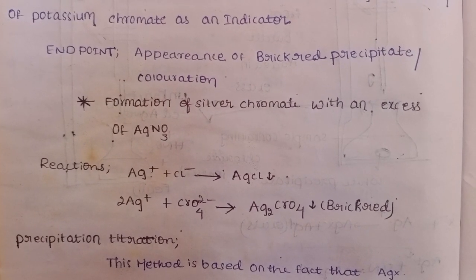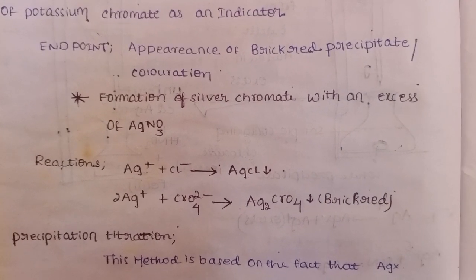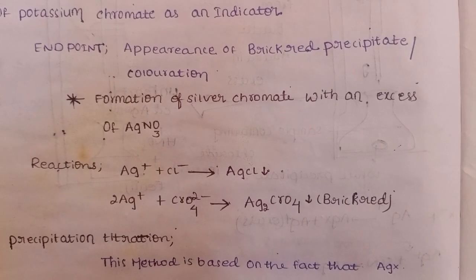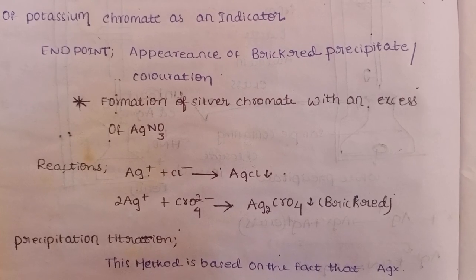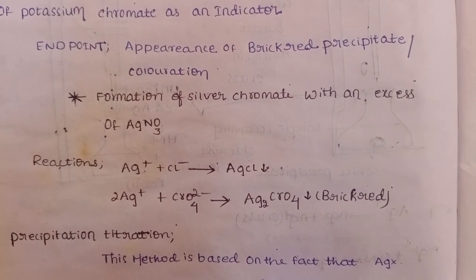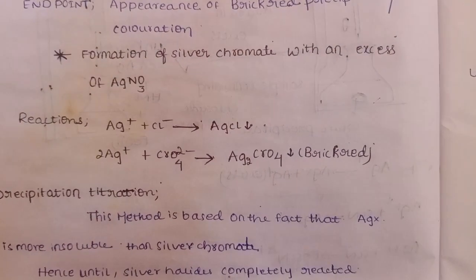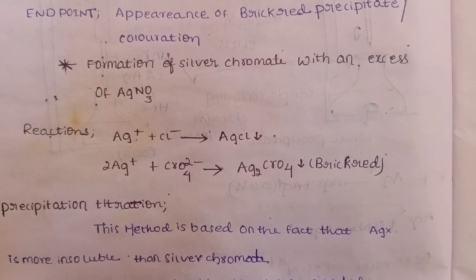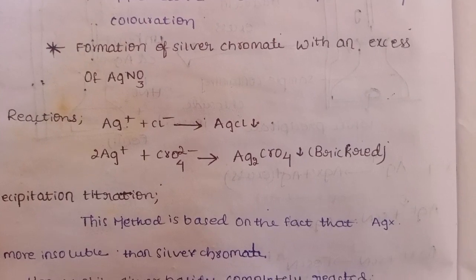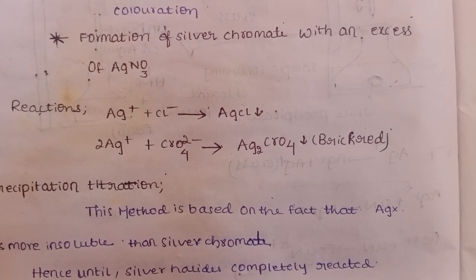Here, a different color is produced - a brick red precipitate forms. This is the formation of silver chromate with an excess of AgNO3. Silver chromate forms when there is excess AgNO3.